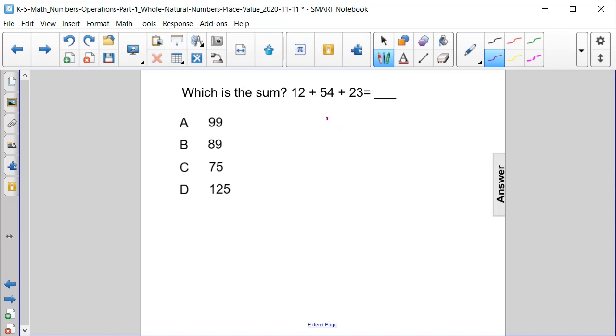Make sure that we line up our numbers, so 1 is in the tens column and 2 is in the ones column. In the next number, 5 is in the tens column and 4 is in the ones column. And in 23, 2 is in the tens column and 3 is in the ones column. Add them all together.